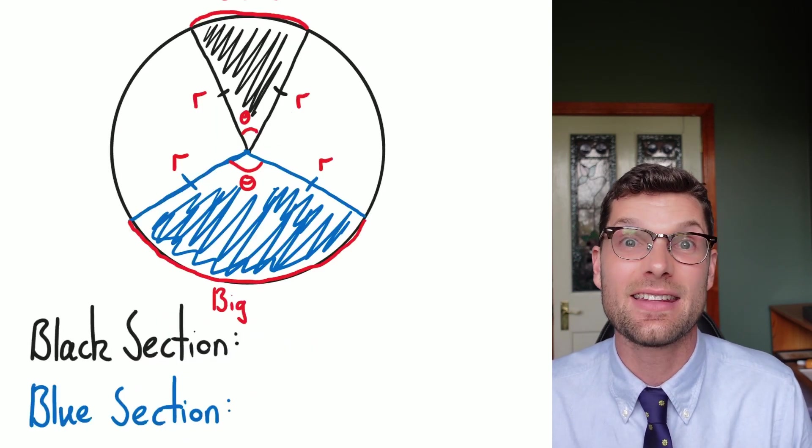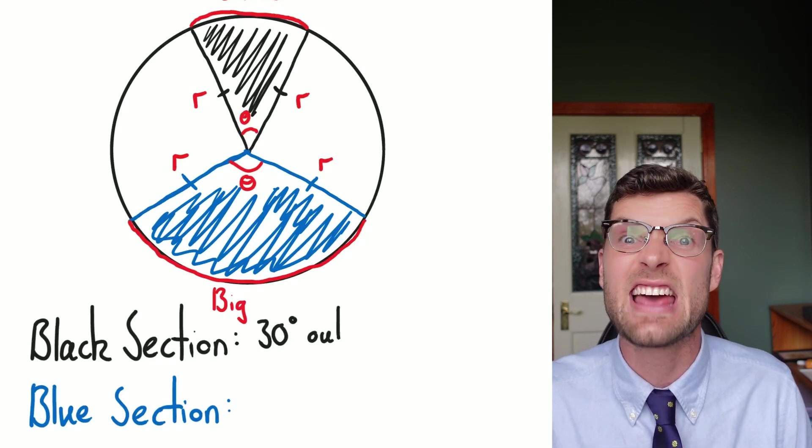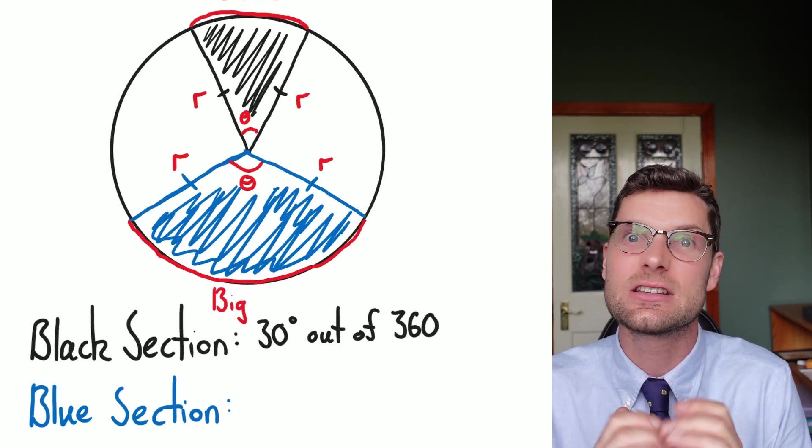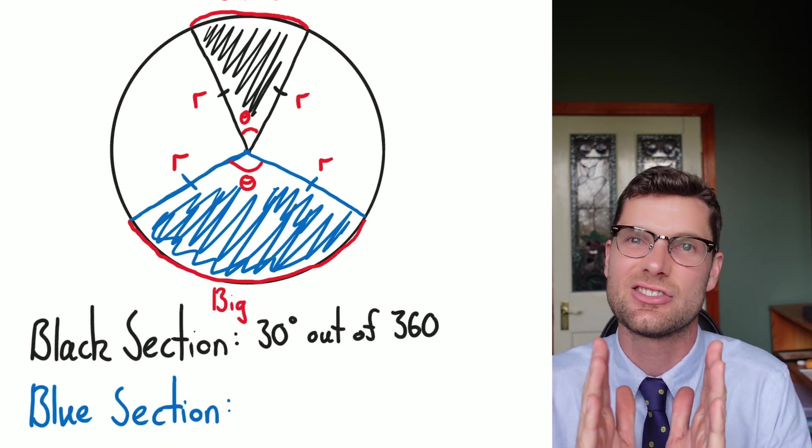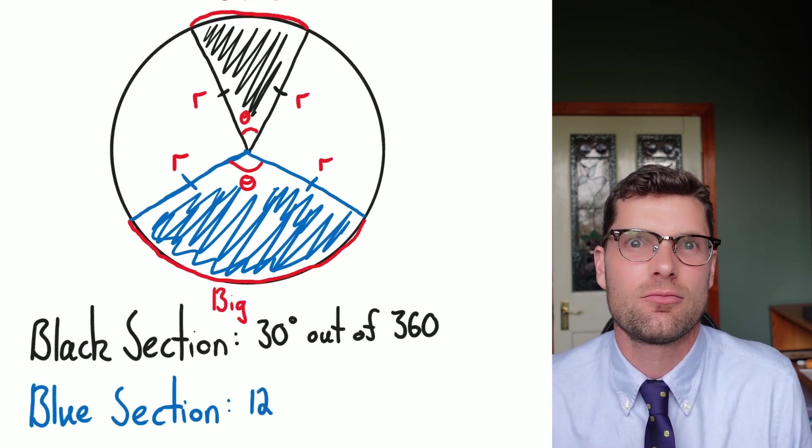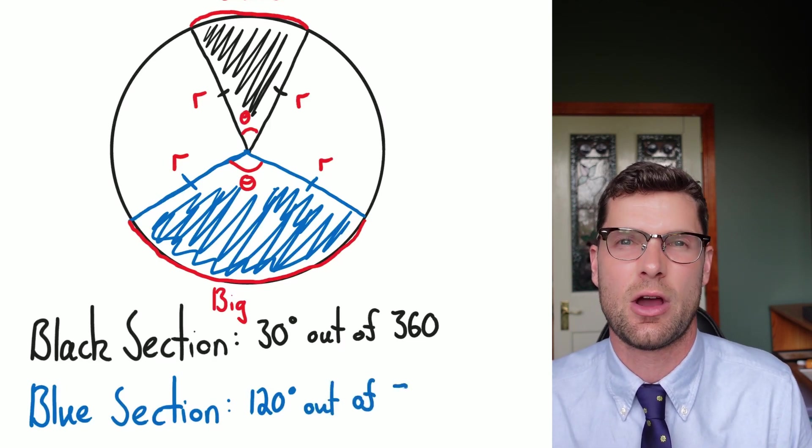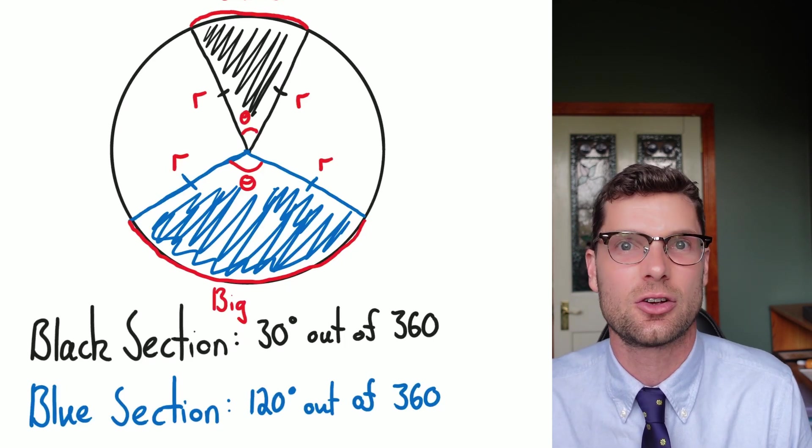So one way to think about it is that the black section in this example could be taking up 30 degrees out of the possible 360 degrees, right? It's only a small fraction of it, so that makes sense. It's not the whole thing, just a little piece. The blue section could be taking up a larger section of this circle as well. We know it's going to be less than 180, but it could be something like 120 degrees of the 360 degrees that there are.